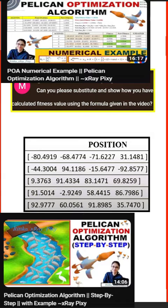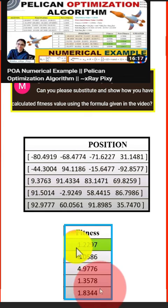In pelican optimization algorithm numerical example, we use four search agents to find out the optimal solution. Now the question is how we can substitute these values to find out the fitness value for each search agent.